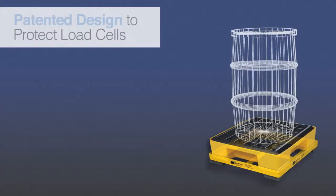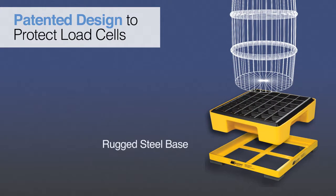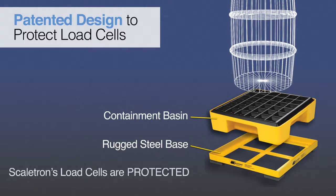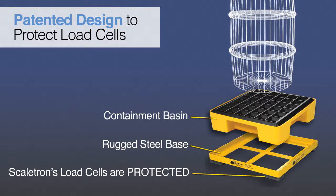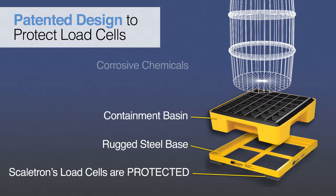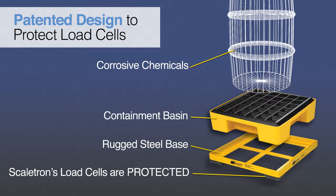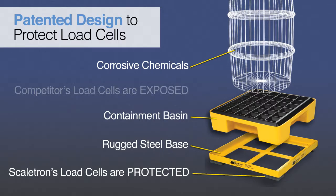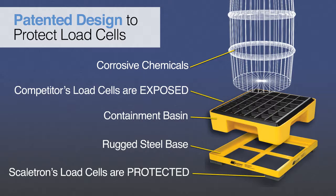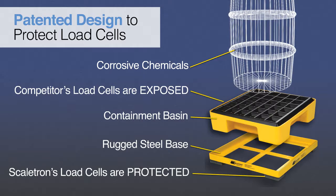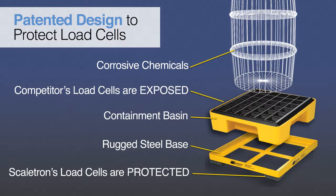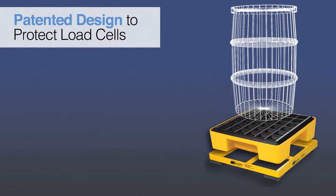Scaletron's patented design features a scale base with a separate molded plastic spill containment basin. The load cells are completely sealed in the scale base, under the containment basin, and out of contact with corrosive chemicals. Other designs on the market have the load cells and wiring mounted inside the spill containment tank, where they are fully exposed to even the slightest spill or splash. Just one spill can cause the load cells and wiring to corrode, requiring expensive maintenance and replacement.